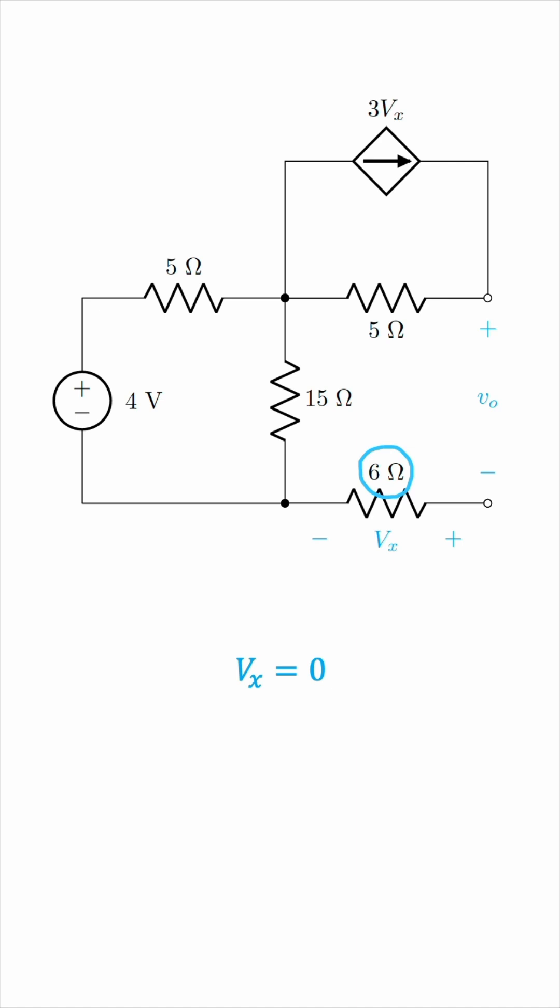You know, by Ohm's law, Vx will be the resistance times the current, so 6 times the current, but there's no current,